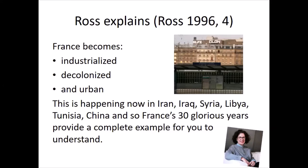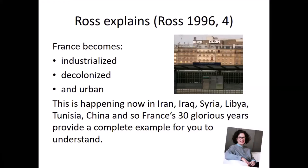In that time, France becomes industrialised — it starts to manufacture rather than just produce agricultural products. It becomes decolonised: it stops being France across the Mediterranean in Algeria, which was a big part of France, so it decolonises itself and its colonies are decolonised. And it becomes more urban. At the beginning of this period, more people lived in the country than in towns, and by the end of it, there were more city dwellers than country people.